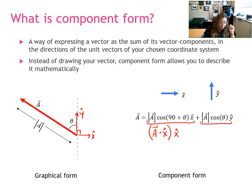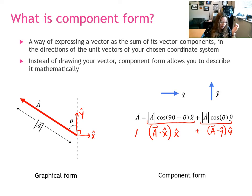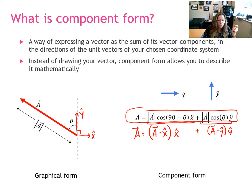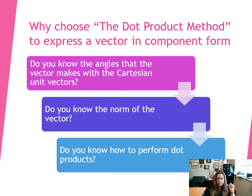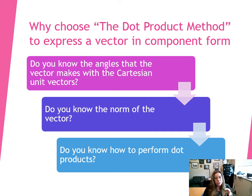The same thing is true in the y-hat direction: we have a dotted with y-hat times y-hat. Adding those terms together, this is how vector a is expressed in this particular Cartesian coordinate system — this is an expression in component form. The method I'm going to show you in this video is called the dot product method. It's basically using dot products to take a vector and express it in component form in the Cartesian coordinate system. There are multiple ways to express a vector in component form; this is just one of them.